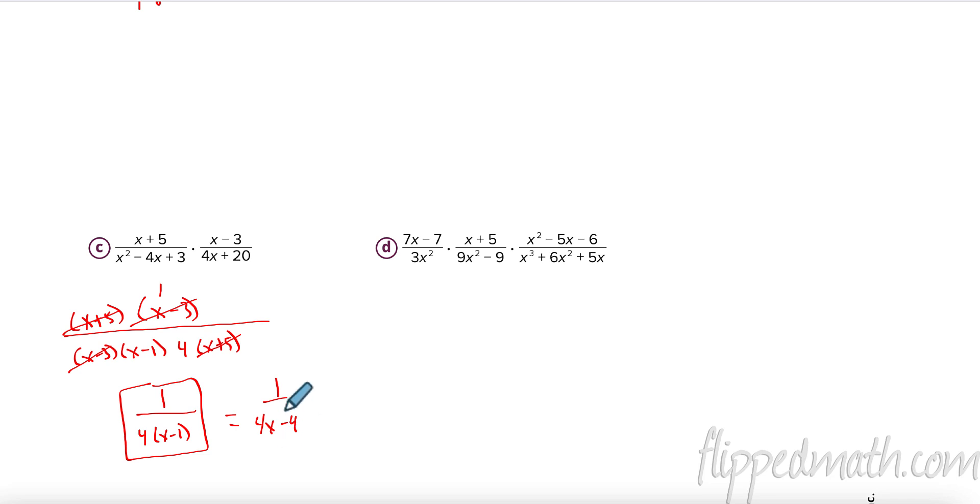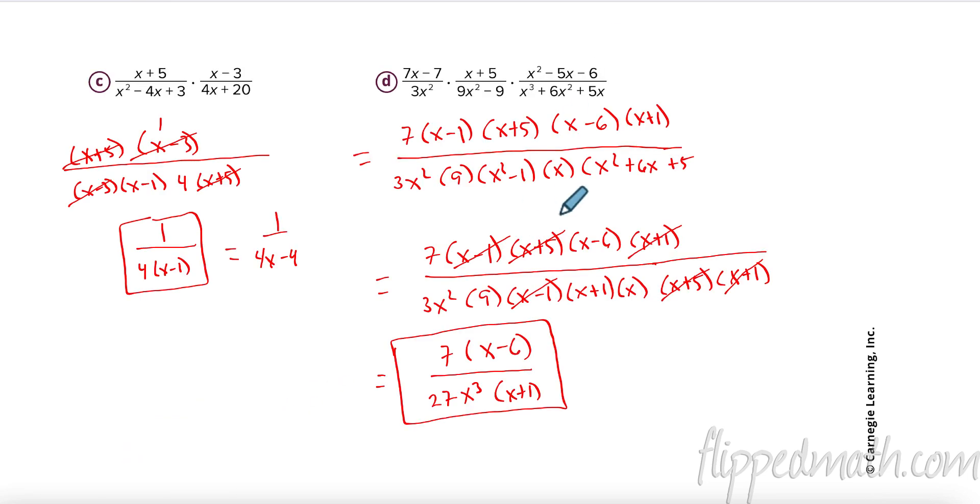So, I want you to pause the video right now. And I want you to try letter D all by yourself. So, I took a common factor out. I got 7 times X minus 1, X plus 5. Here, two numbers that multiply to negative 6 and add to negative 5 are negative 6 and positive 1. Down here, 3X squared. Here, I took a common factor out. And I had X squared minus 1. Here, I took a common factor of X out. And then, I had X squared plus 6X plus 5. Had a factor on the bottom. The top stayed. But, on the bottom, X squared minus 1 was X minus 1 and X plus 1. And, two numbers that multiply to 5 and added to 6 were 5 and 1. Then, I had several things that canceled out. And, I was left with 7 times X minus 6 over 27X to the third times X plus 1.